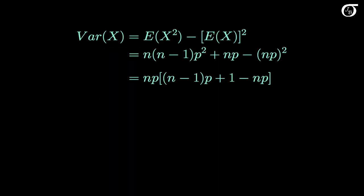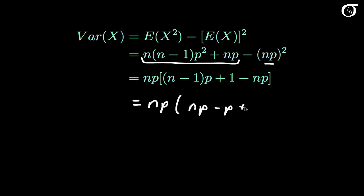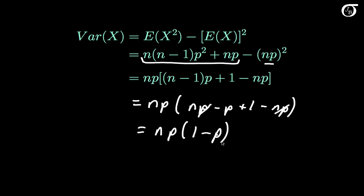Now we're almost done. The variance equals E[X²] minus the square of E[X]. We just worked out E[X²] = n(n-1)p² + np, and E[X] = np. After some basic algebra, factoring out np, we arrive at a variance of n times p times (1-p), which is the variance of a binomial random variable.